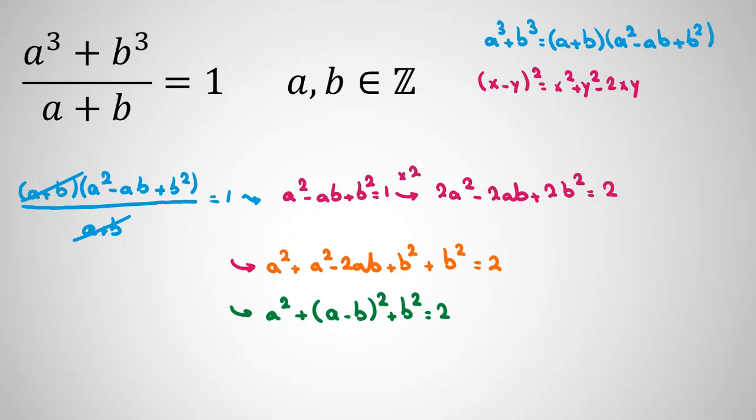Here, we know A and B are integers, and all of them are greater than or equal to zero. Each of them can be positive or negative 1 or 0. Because if one of them is 2, then 2 squared is 4, and the left-hand side will be greater than or equal to 4, but the right-hand side is 2.